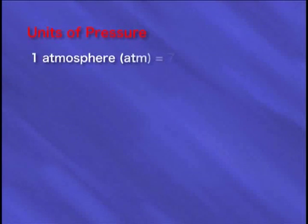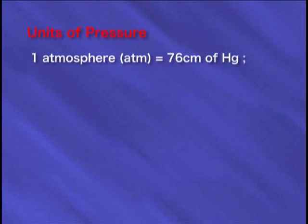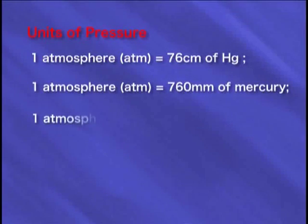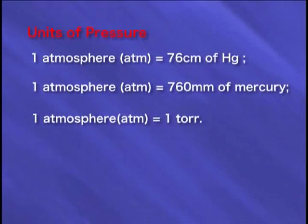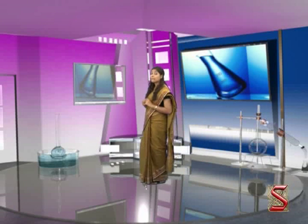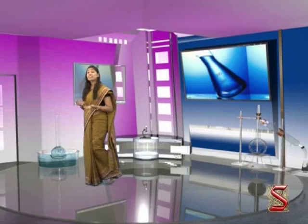This shows that under normal conditions of temperature, the pressure exerted by air is 76 cm or 760 mm of mercury at sea level. Pressure is expressed in terms of atmospheres. The units of pressure are: one atmosphere equals 76 cm of mercury, one atmosphere equals 760 mm of mercury, and one atmosphere equals one torr. Pressure on mountain tops and hill stations is usually less compared to sea level, because pressure gradually decreases with increase in altitude.